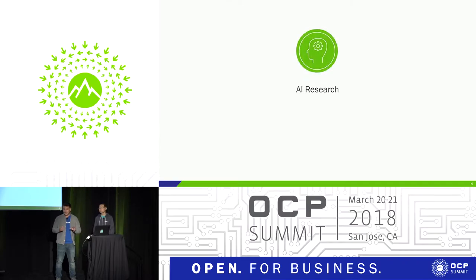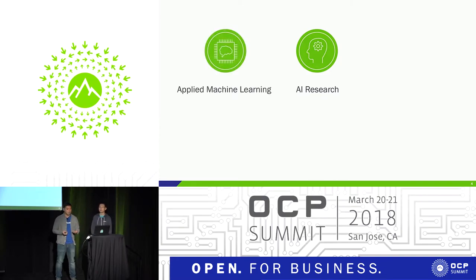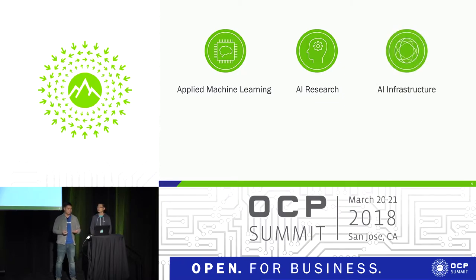So AI research — Facebook is very committed to developing AI and AI research and its disciplines. The type of research that we do gets open sourced in the future. We develop and apply machine learning teams to put these types of research into production. And we have AI infrastructure teams that go and build the type of hardware that's needed for all these pieces.